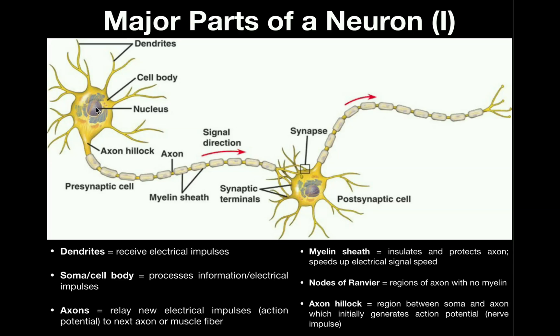This is the cell body, and housed within the cell body we have the nucleus. Now there's a much larger projection — not only is it thicker, it's also longer, and there's typically only one of them per neuron. This is called the axon, and it's a little bit more complicated than the other parts.